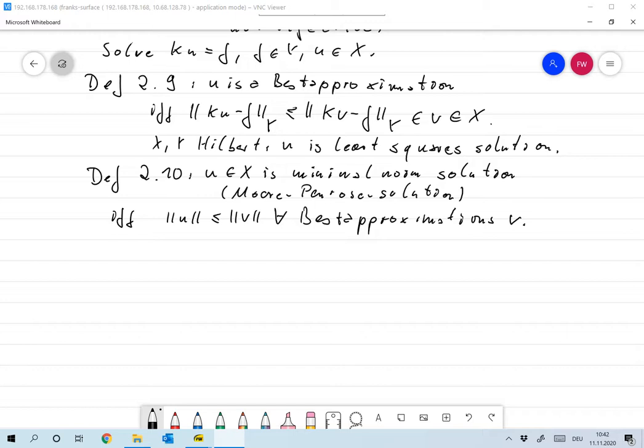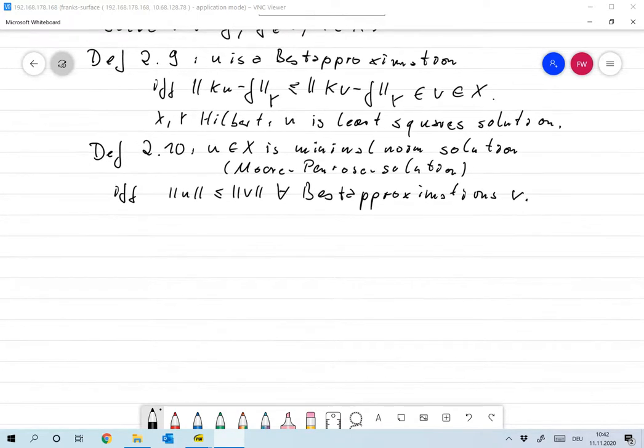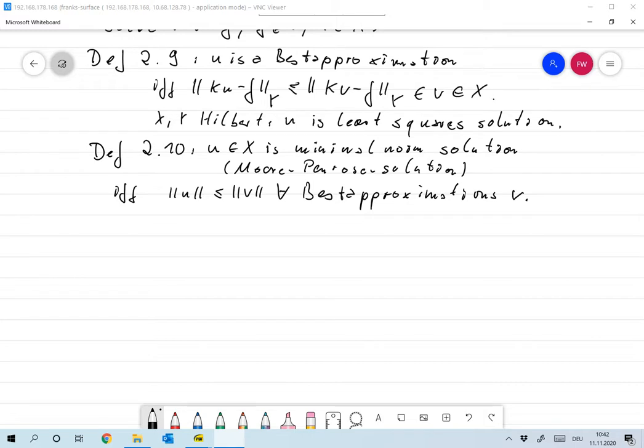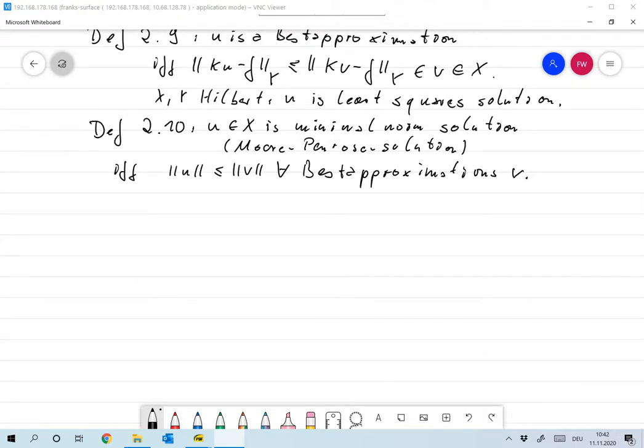And we'll see that for Hilbert spaces at least this makes you uniquely defined if the set of best approximations is non-empty. Let me first give you some notation. I think it's probably perfectly clear, but let me write it down anyway.